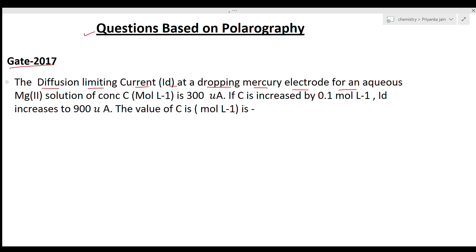We are given that the concentration of the solution is C moles per liter and its limiting current is 300 microamperes. If C is increased by 0.1 moles per liter, I_D increases to 900 microamperes. We have to find the value of C in moles per liter. So the diffusion limiting current at the dropping mercury electrode is 300 microamperes when the concentration is C, and when concentration is increased to C + 0.1, the I_D becomes 900 microamperes.